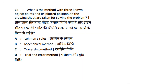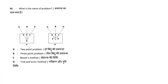What is the method with three non-object points where the plotted positions on the drawing sheet are taken for solving the problem? Options: Lehmann's Ruler, Mechanical Method, Tracing Method, Trial and Error Method. Answer is option B — Mechanical Method. That means you have 3 non-object points A, B, C and you solve the 3-point problem. So answer option B.